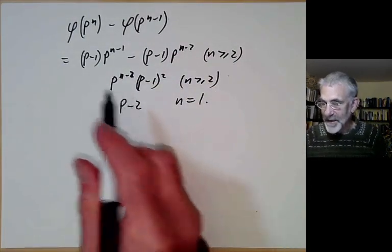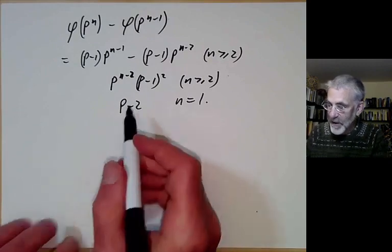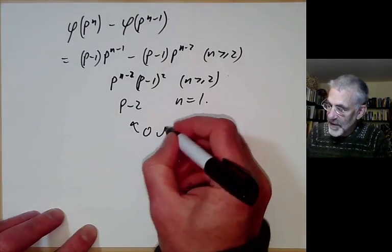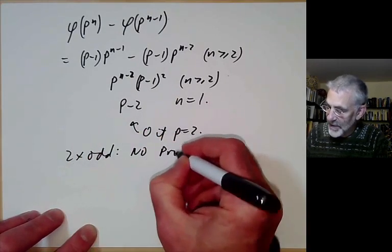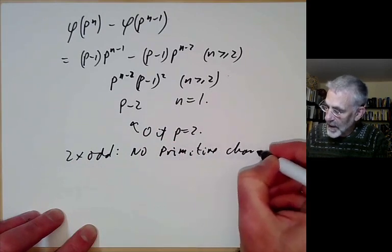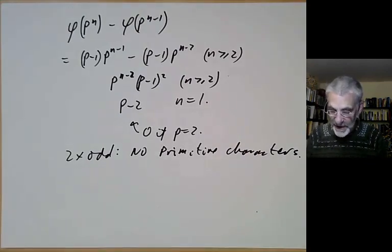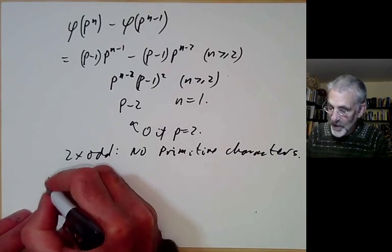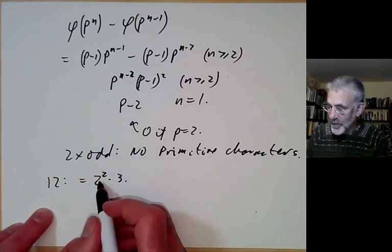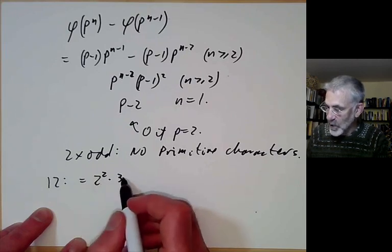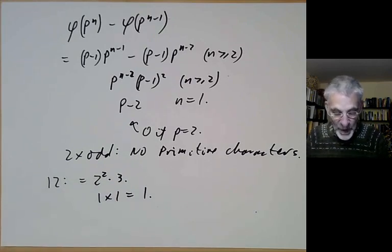In general, if n is a product of prime powers, the number of primitive characters is the product of the primitive character counts for each prime power. Note this is 0 if p equals 2, so for numbers of the form 2 times something odd, there are no primitive characters — as seen earlier for modulo 2 or modulo 6. For n equals 12, which is 2 squared times 3, there is 1 primitive character for 4 and 1 for 3, giving 1 primitive character modulo 12.